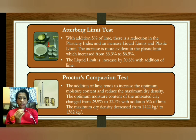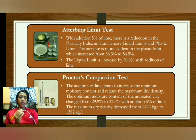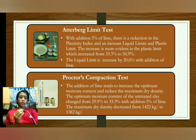The second test is the Proctor Compaction Test. The addition of lime tends to increase the optimum moisture content and reduce the maximum dry density. The maximum moisture content of the untreated clay changed from 29.9% to 33.3% with addition of 5% lime. The maximum dry density decreased from 1,422 kg per cubic meter to 1,382 kg per cubic meter.